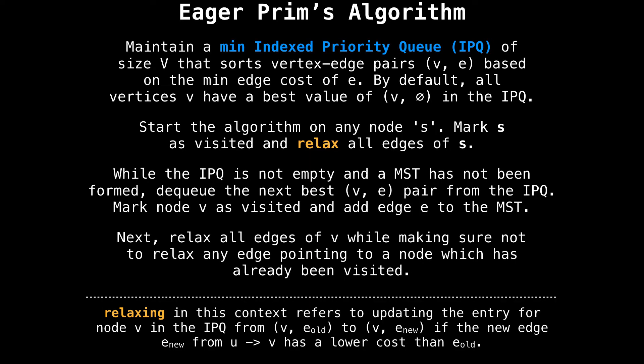The implementation for the eager version is slightly different, and the algorithm goes as follows. Maintain an IPQ of size V that sorts vertex-edge pairs (V, E) based on minimum edge cost of E. Start the algorithm on any node S, mark S as visited, and relax all the edges of S. Relaxing in this context refers to updating the entry for node V in the IPQ from (V, old edge) to (V, new edge) if the new edge has a better cost. Then, while the index priority queue is not empty and a minimum spanning tree has not been formed, dequeue the next best vertex-edge pair (V, E) from the IPQ, mark node V as visited, add edge E to the MST, and relax all edges of V — making sure not to relax any edge pointing to a node which has already been visited.